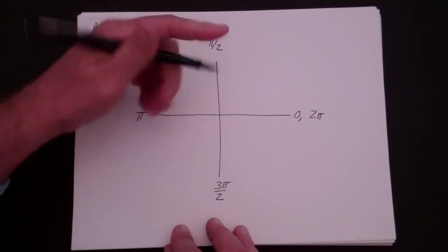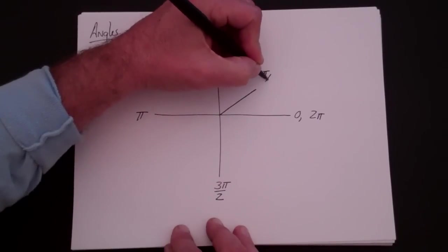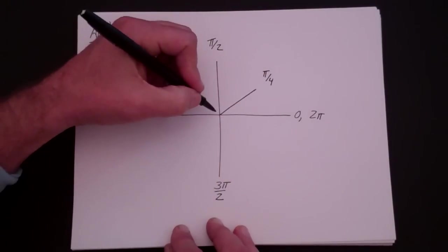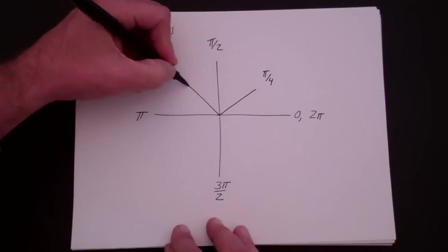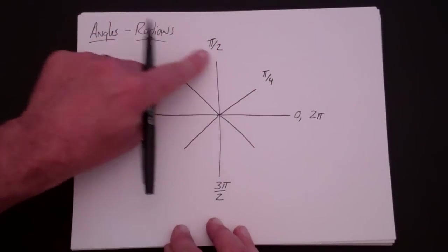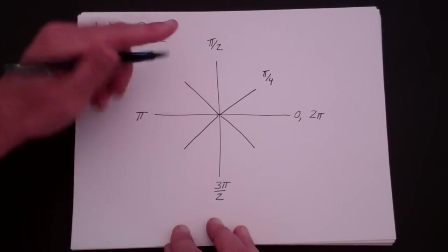Now if you think about this, if this is pi over 2, half of that is going to be pi over 4. And here it gets a little bit tricky. Let's divide each one of these quarters or quadrants in half. This is 3 pi over 4.